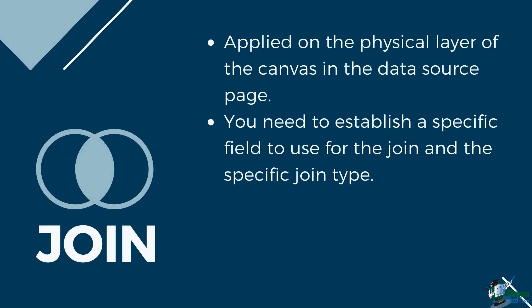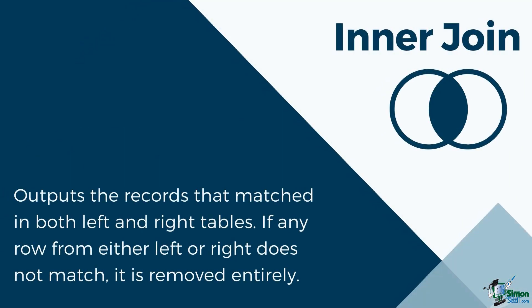Earlier, we mentioned that a blend is similar to that of a left join. As a review, a join is applied on the physical layer of the canvas in the data source page. You need to establish a specific field to use for the join and the specific join type. Let's look at the different types of join that we can apply in Tableau. An inner join table will contain the records that matched in both left and right tables. If any row from either left or right does not match, it is removed entirely.